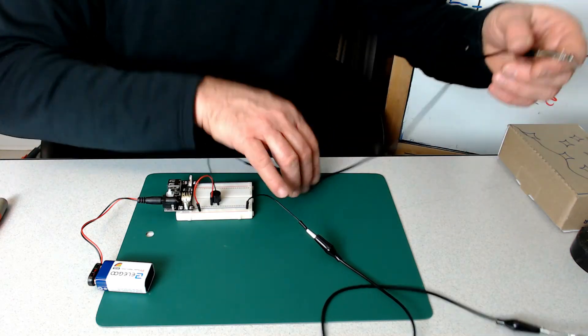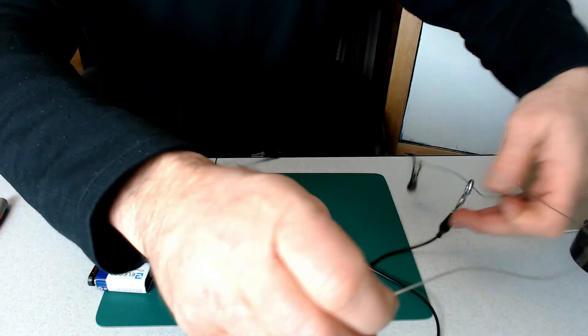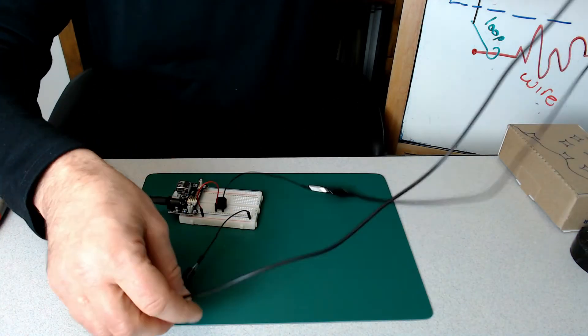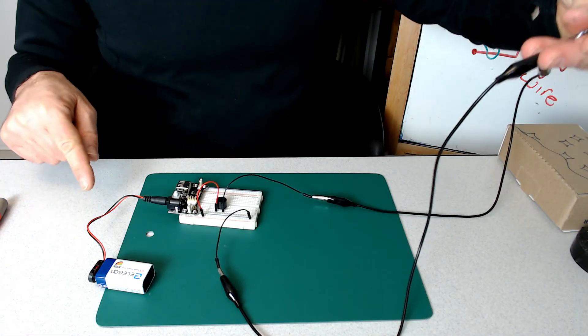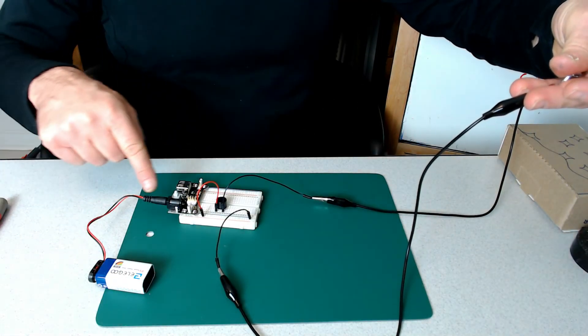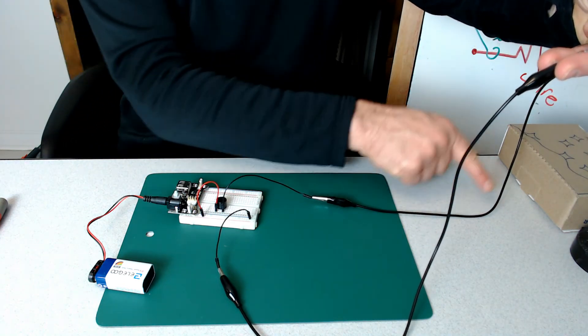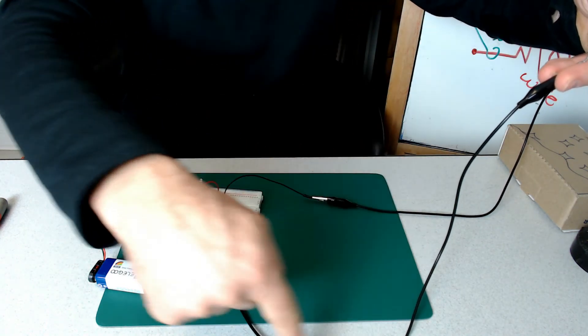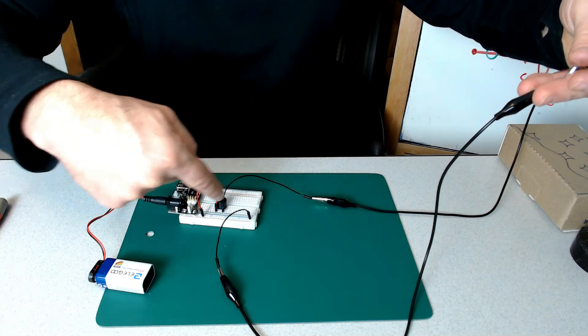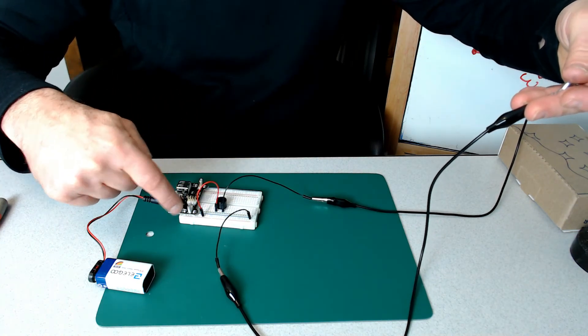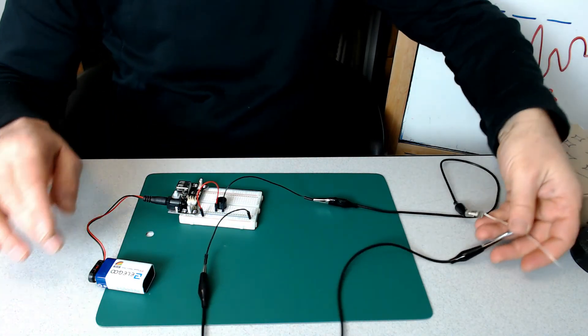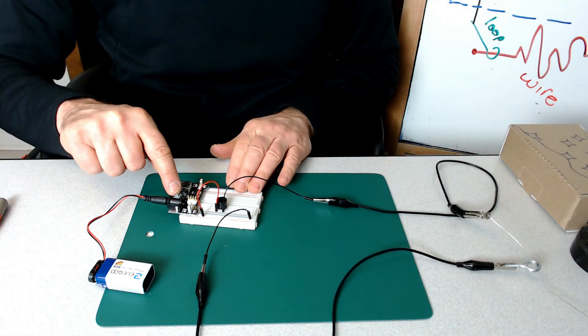Now before inserting everything into the box, let's check that our circuit is complete, starting with a battery, going through the buzzer, through the flexible wire, and through the hook, and back to the negative side of the battery. We have a full serial circuit. Let's check that everything is working.